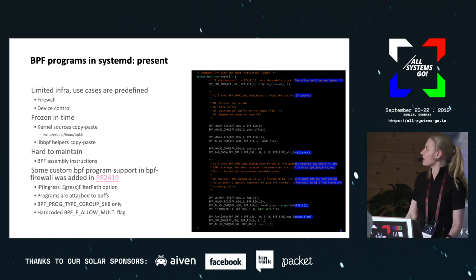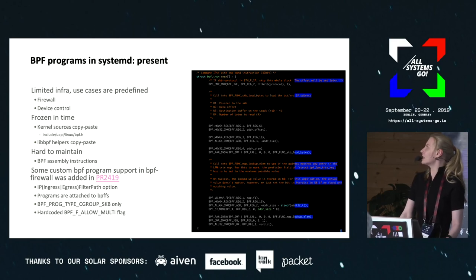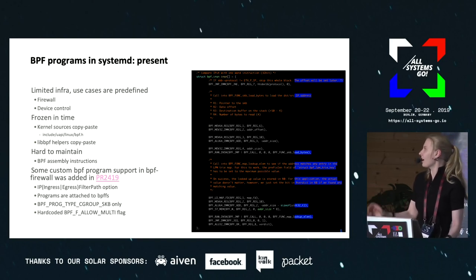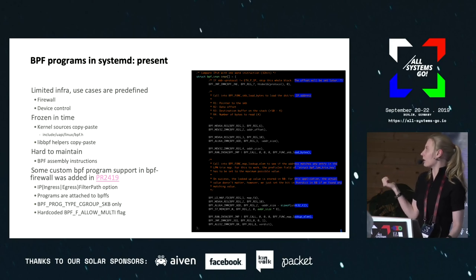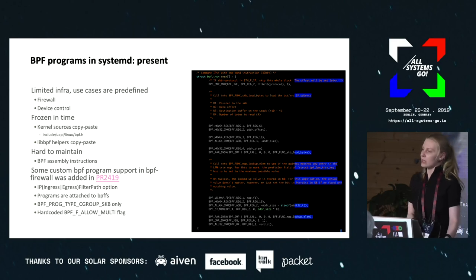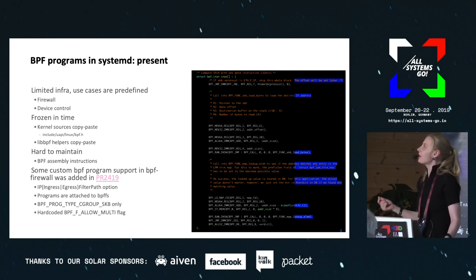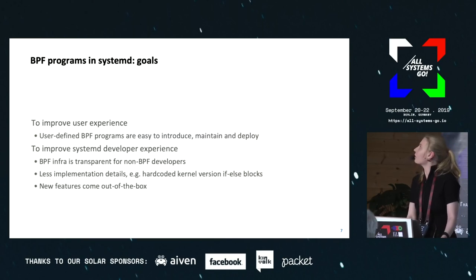There is some good news: custom BPF firewall support was added for the firewall use case. You can specify a path to the BPF filesystem where your program is pinned — meaning it's loaded and has a valid file descriptor. However, this supports only one BPF program type, and you can attach only to the egress or ingress hook. Another important part is flags: currently only multi-flags are supported, but override flags would also be useful.